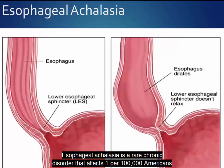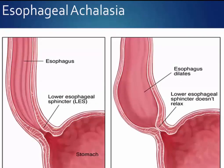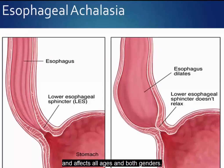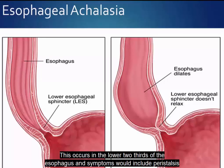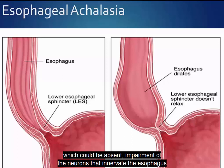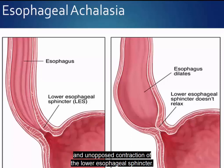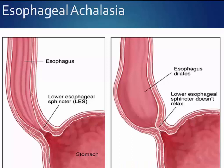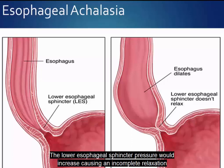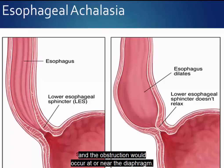Esophageal achalasia is a rare chronic disorder that affects one per 100,000 Americans and affects all ages and both genders. This occurs in the lower two-thirds of the esophagus. Symptoms include absent peristalsis, impairment of the neurons that innervate the esophagus, and unopposed contraction of the lower esophageal sphincter, causing incomplete relaxation and obstruction at or near the diaphragm.